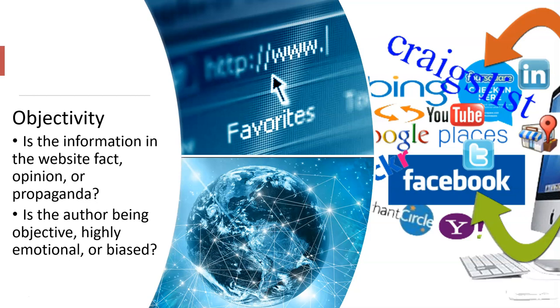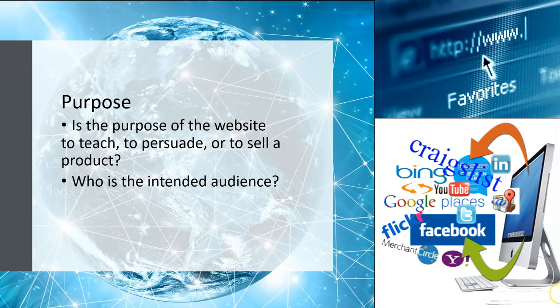Objectivity — this is a big one. Is the information in the website fact, opinion, or propaganda? Is the author being objective, highly emotional, or biased? Purpose: Is the purpose of the website to teach, to persuade, or to sell a product? Who is the intended audience?